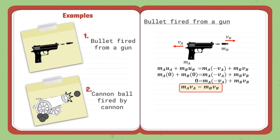I will go through the first example: a bullet fired from a gun. Since total momentum before explosion equals total momentum after, the equation is: MA·UA plus MB·UB equals MA·(−VA) plus MB·VB. The negative sign at VA indicates the opposing motion of object A — the gun recoiling — after the bullet is fired. The final simplified equation is MA·VA equals MB·VB.